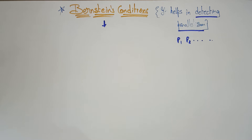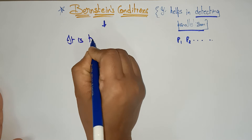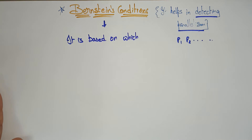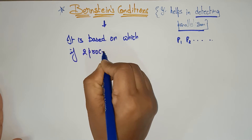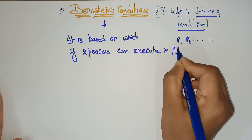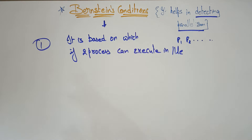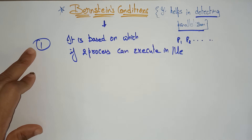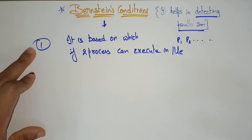In this video I'll give an introduction to Bernstein's condition, and in the next video I'll take an example to show how to detect parallelism using it. Bernstein's conditions are of two types. The first condition is based on whether two processes can execute in parallel — we check whether two processes are executing in parallel or not.